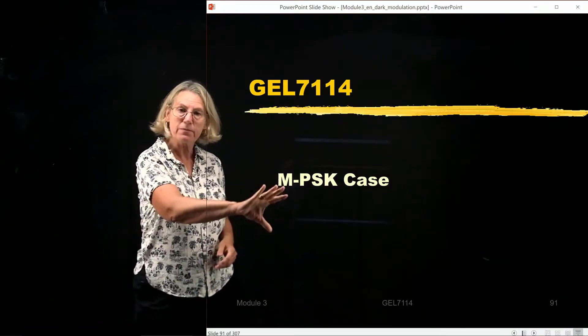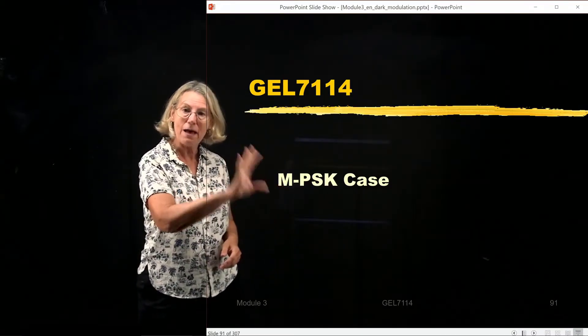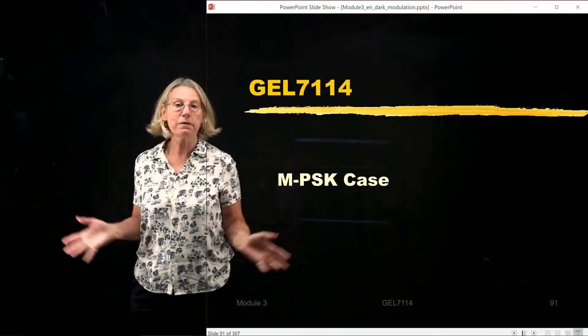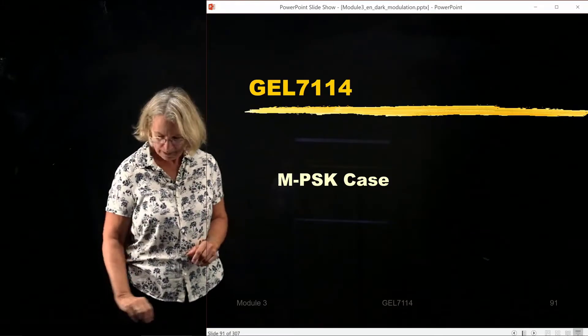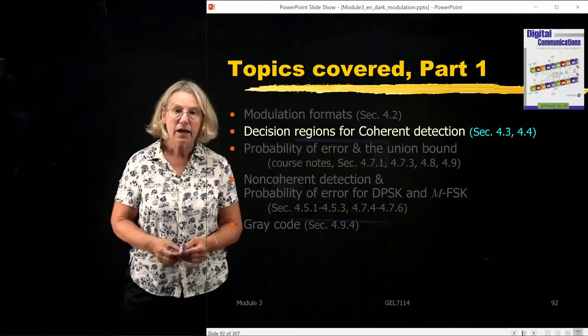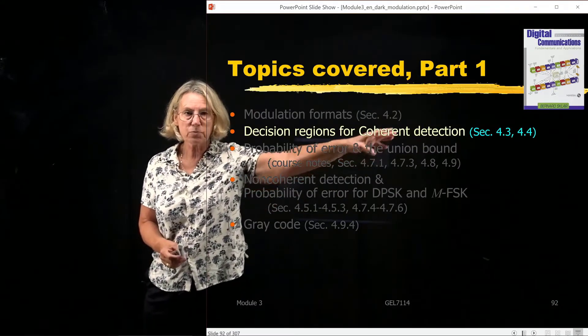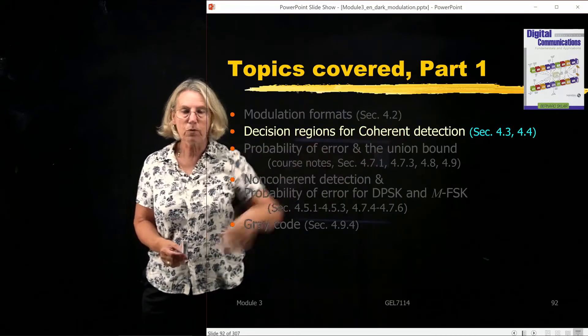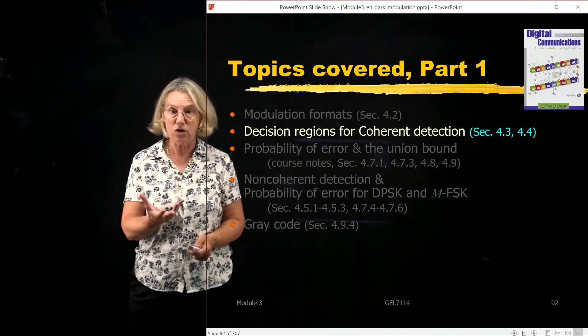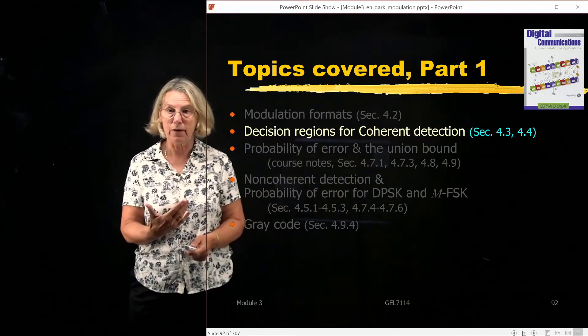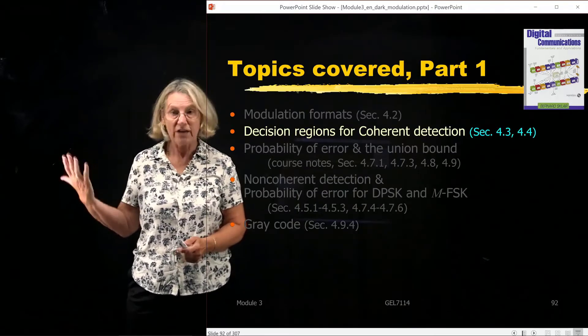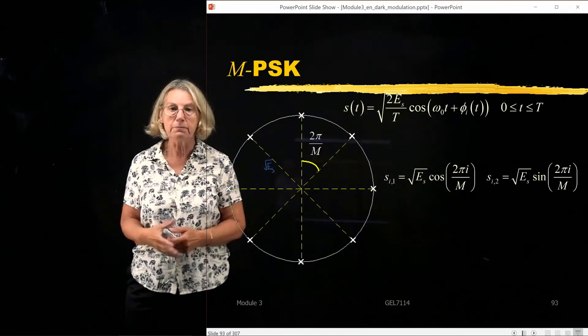But now what we'd like to do is let's find the probability of error for M-PSK where M can be any value, not just 4 for QPSK. And again this is covered in the Sklar textbook in sections 4.3 and 4.4. They give you the equation and what I'm going to do is develop the equation given the general expression we have from the union bound.